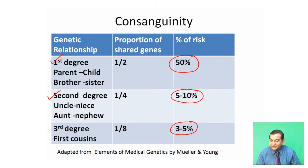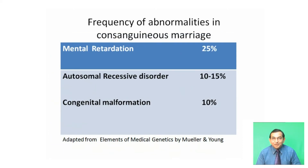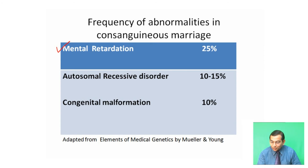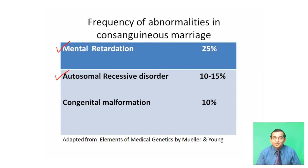Regarding the frequency of abnormalities in consanguineous marriage, the major type of abnormality is mental retardation — there is a 25 percent chance of mental retardation. There is a 10 to 15 percent chance of autosomal recessive disorder, and a 10 percent chance of congenital malformation. Overall, consanguineous marriage is harmful, as recessive characters appear and various types of congenital malformations occur.